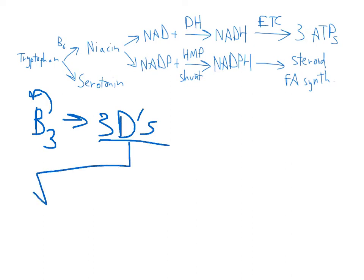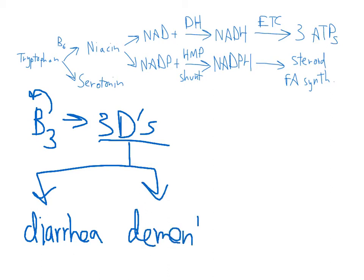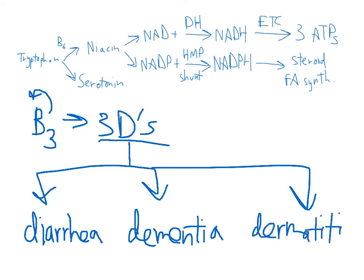So the three Ds of pellagra. The first one is diarrhea, caused by atrophy of columnar epithelial cells. The second is dementia, caused by neuronal degeneration. The third is dermatitis, which will present as a scaly rash on sun-exposed areas. Along with dermatitis, some patients will also present with glossitis.